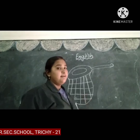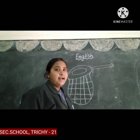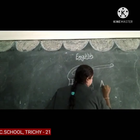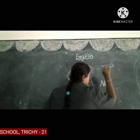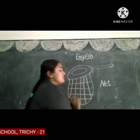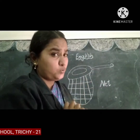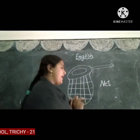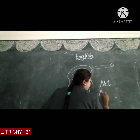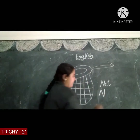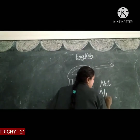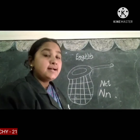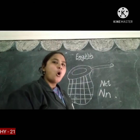What picture is this? It's a net. What letter comes for net, children? N. So capital N. Small N. Capital N. Small N.